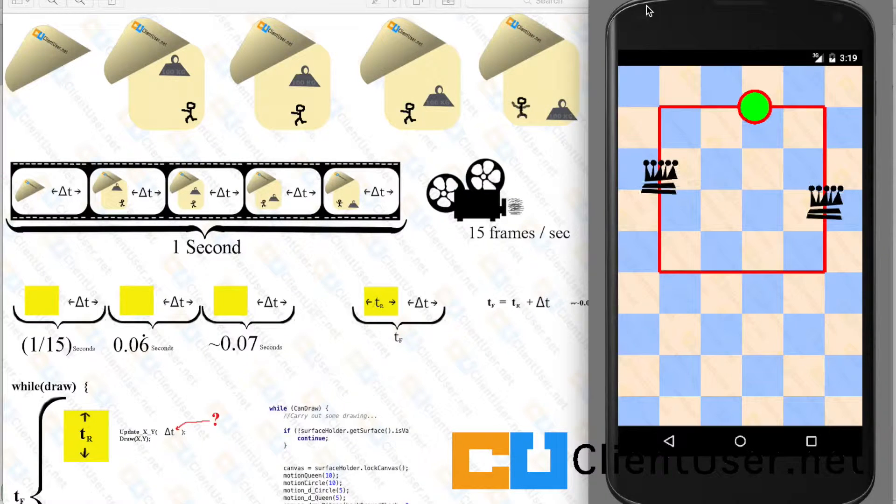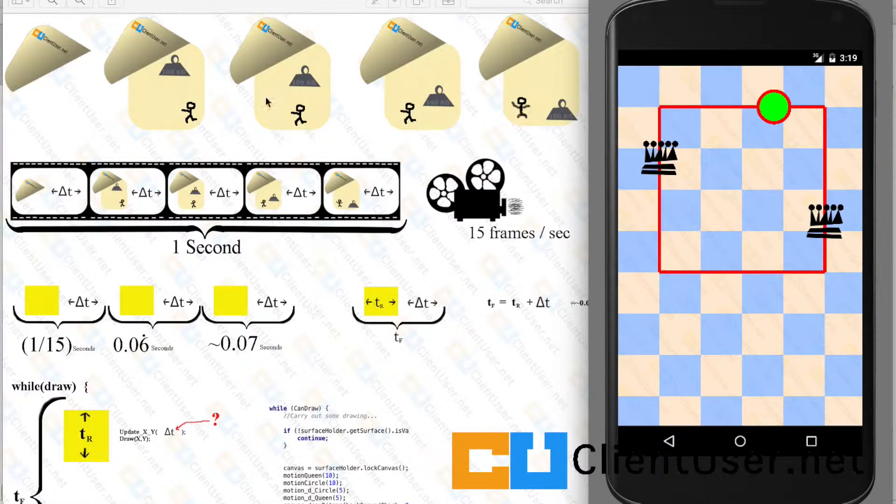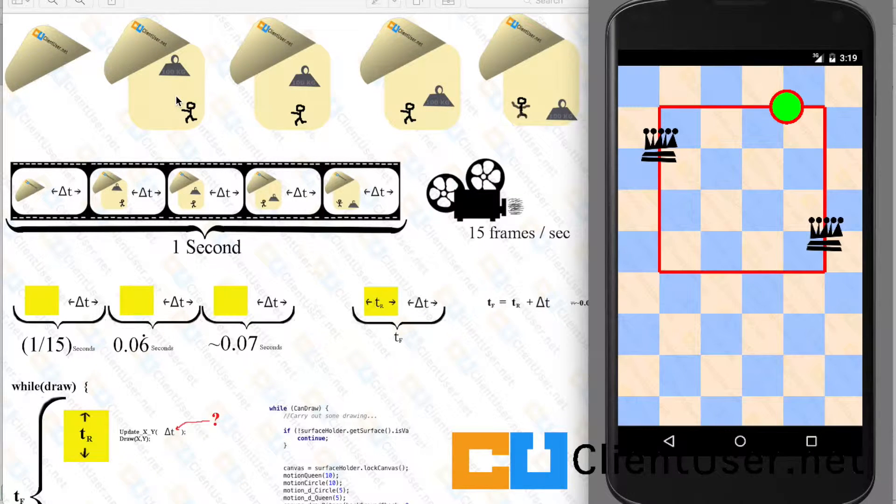This is how we left it at the end of the last animation tutorial. We successfully managed to create an animation by implementing the software equivalent of an old-fashioned flipbook animation. So we calculated the coordinates of our images and we drew our images, and we did that rapidly.